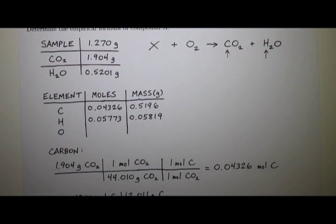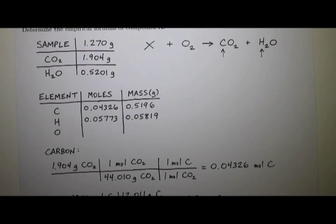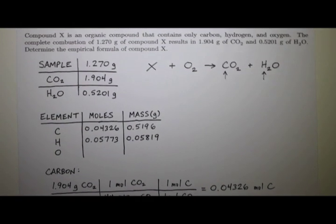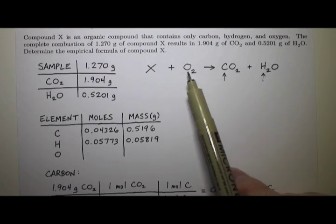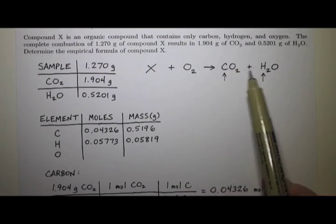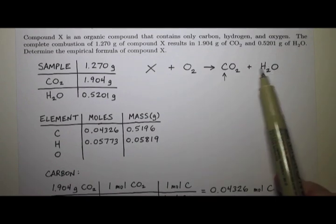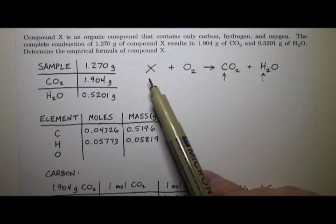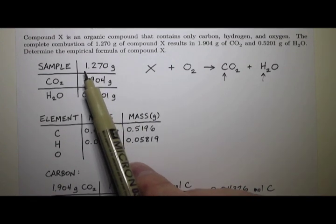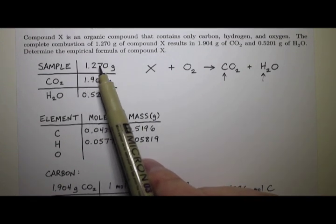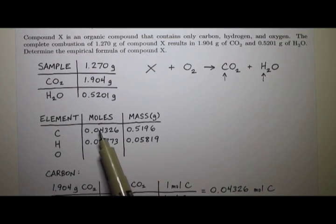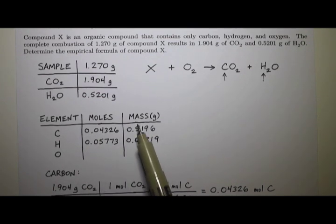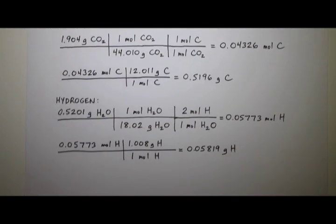We're almost done with the chart here. We have a little bit of a problem, though, because how are we going to get oxygen? Oxygen is on both sides of the equation. So it's kind of everywhere here. It's in all four compounds because we know there's also oxygen in compound X. But we know that the total mass of the sample was 1.270 grams. And we know the mass of the other two things here. So I think what we could do is just do a little subtraction here. I'll do it down here.